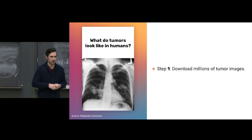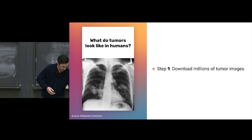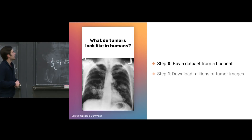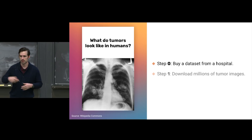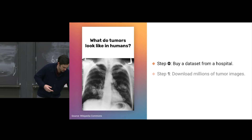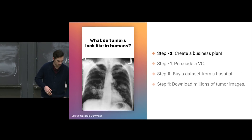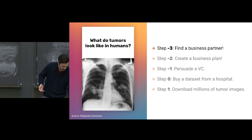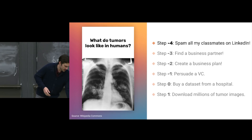But this kind of data is not very easy to come by. It's very rarely collected, difficult to move around, and highly regulated. So we're probably going to have to buy it from a relatively small number of sources that are able to collect and manage this kind of information. The scarcity and constraints around this make it a relatively expensive purchase. And if there's an expensive purchase, we need someone to finance our project, which means a business plan, a business partner, spamming classmates on LinkedIn — all because we wanted to answer the question: what do tumors look like in humans?